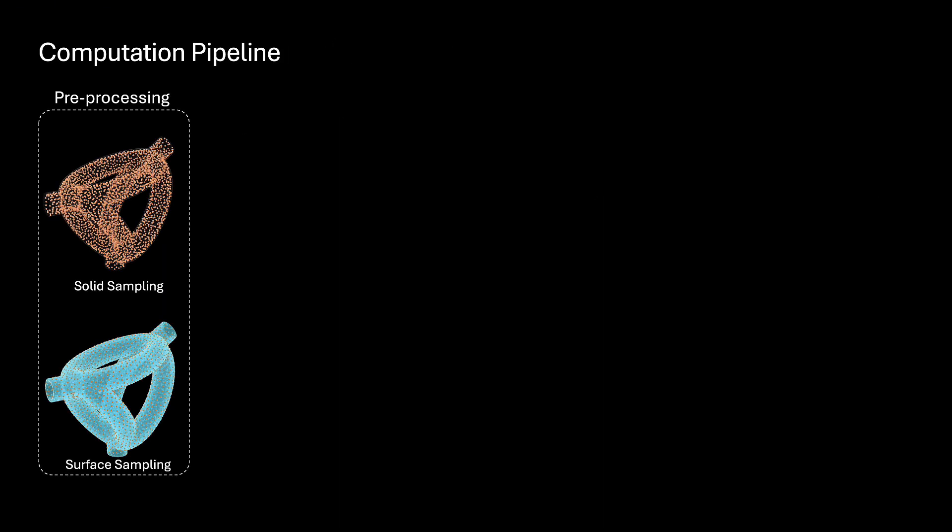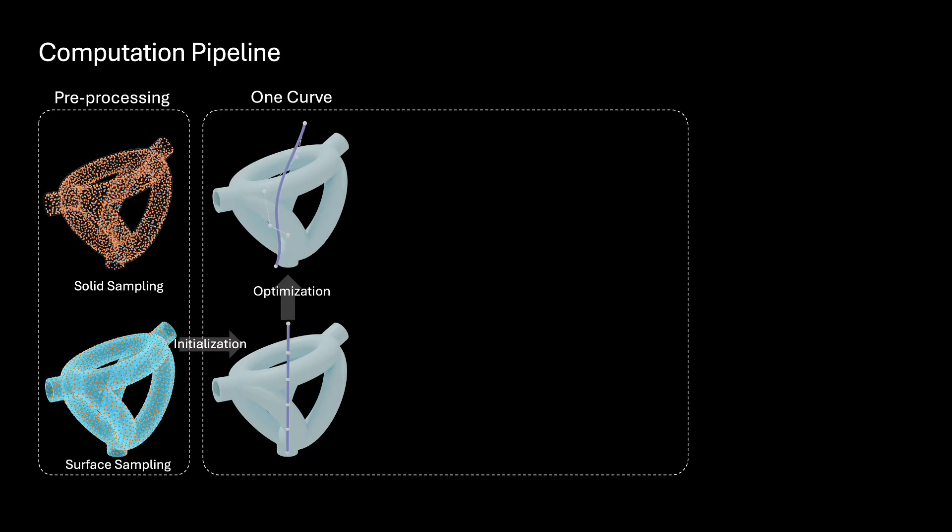The computational pipeline supports the optimization with multiple curves, starting from sampling the input model's solid and surface. We first optimize the slicing by a single curve.